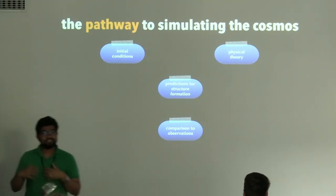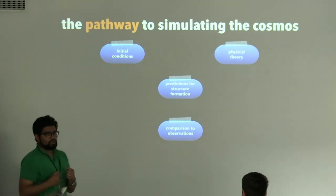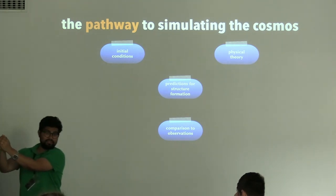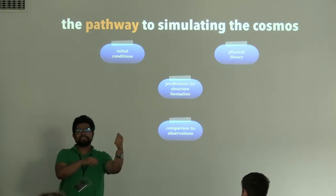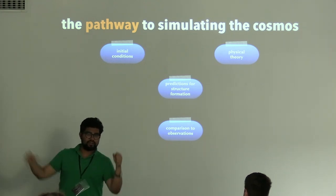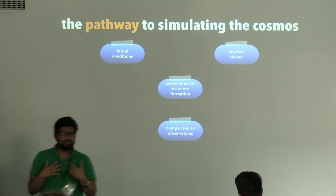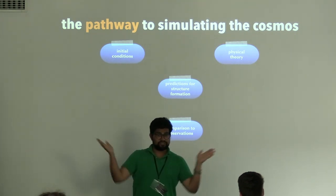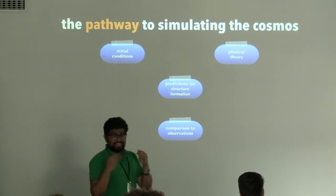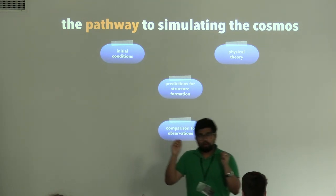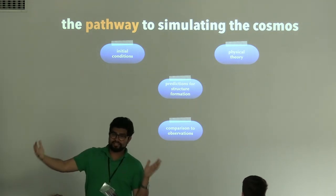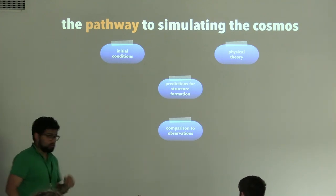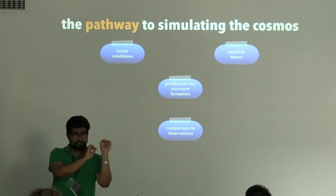How do we get to the idea of simulating the universe? All we're trying to do is model a physical system — the system starts at point A and we want to get it to point B. For us it's a well-defined problem because we know what B is: we can observe the universe around us. It turns out the initial conditions are also very well known, so the question is how we make the connection from start to end point.